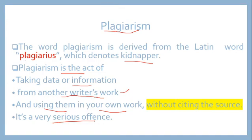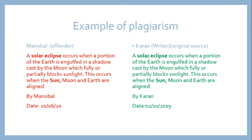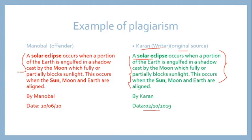To understand plagiarism, let's look at one example. Suppose Karan, a writer, has given a theory on solar eclipse and published it on the internet through a post on a particular date. Karan is the original writer and this is the original source — on a particular website. What I have done is I used this theory on my own website without acknowledging Karan or that website. I just copied the data from there and pasted it on my website. This is a crime and this comes under plagiarism.